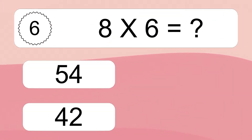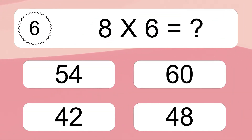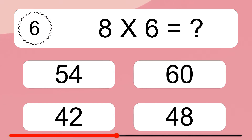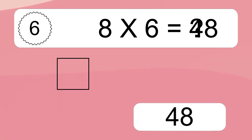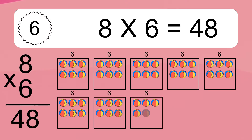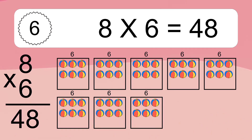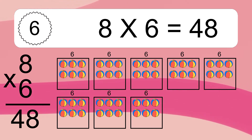Eight times six equals what? Eight times six equals forty-eight. We have eight boxes, and each box has six colorful balls inside. If you count all the balls in all the boxes together, you will have eight times six balls. This equals forty-eight balls.